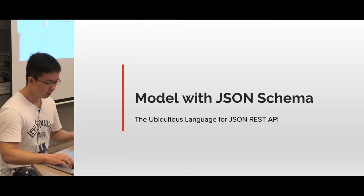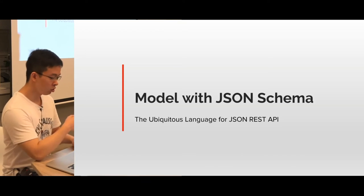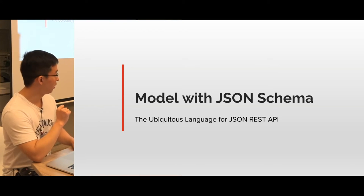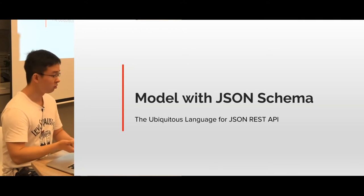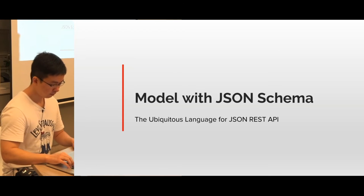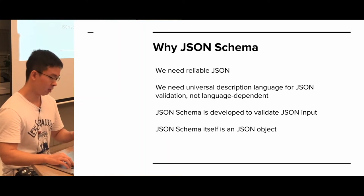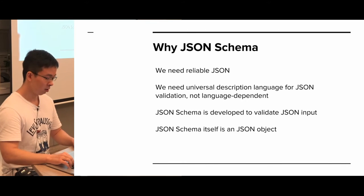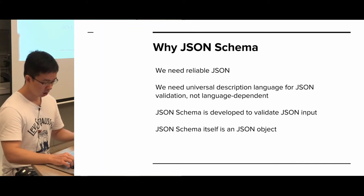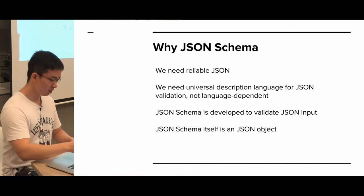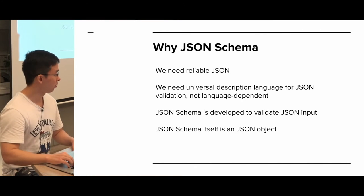When we are developing our REST API, which is HTTP-based, if you use JSON, you will know JSON does not have a schema naturally. So if you want to keep your model and data integrity, how do you validate your JSON data? Why do we need a JSON schema? Because we need reliable JSON and we need a universal description language for JSON validation - not language-dependent, like an annotation-based library for Java. We need something that every developer can understand.